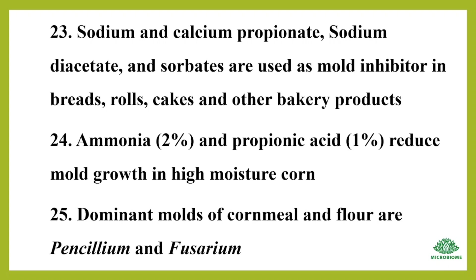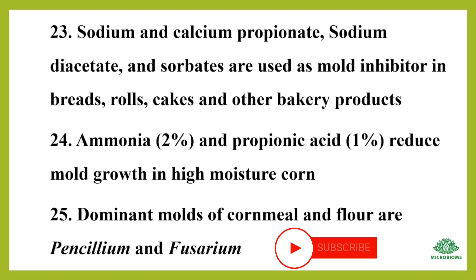Ammonia 2% and propionic acid 1% reduce mold growth in high moisture corn. The dominant molds of cornmeal and flour are Penicillium and Fusarium. If you have any doubts, please ask in the comment section.